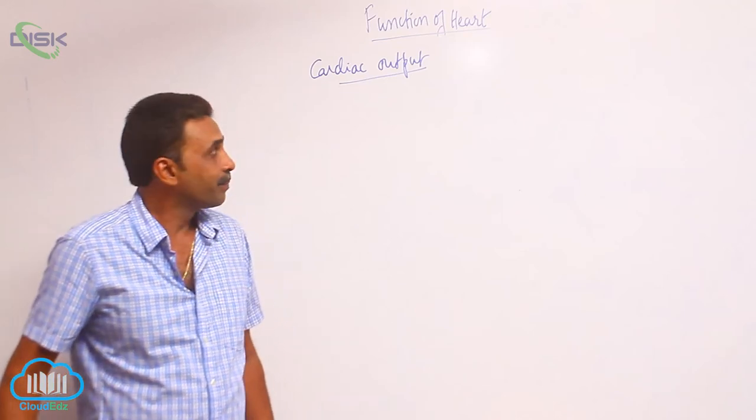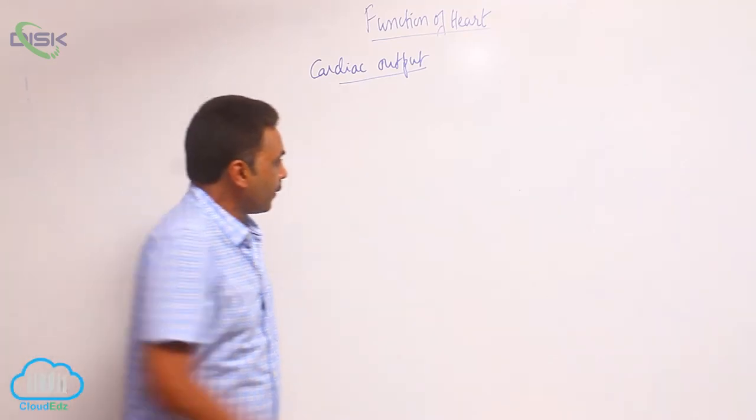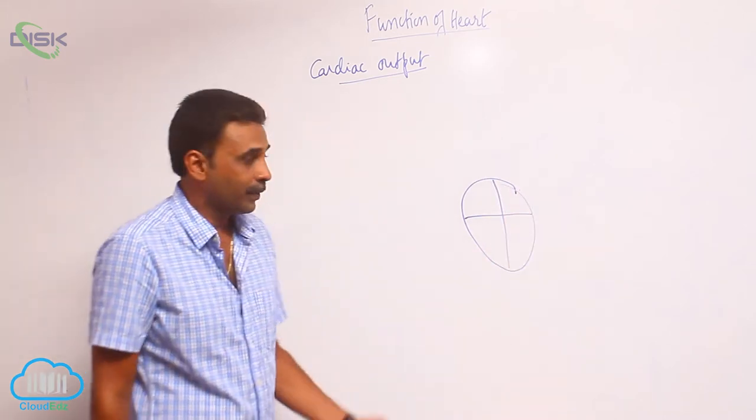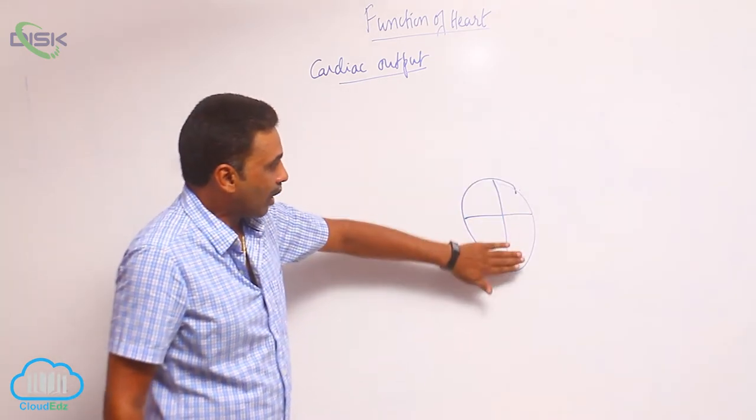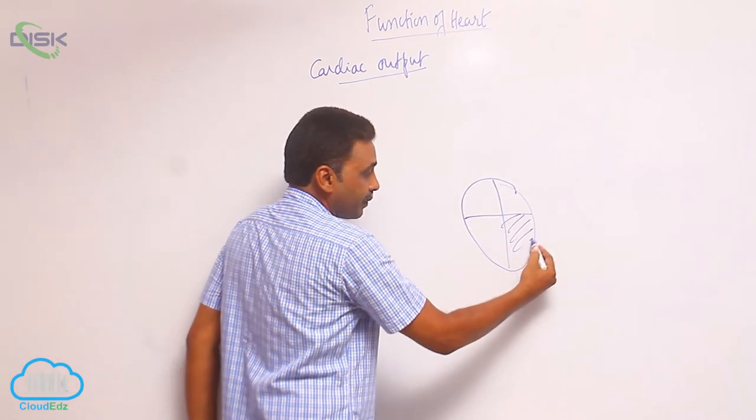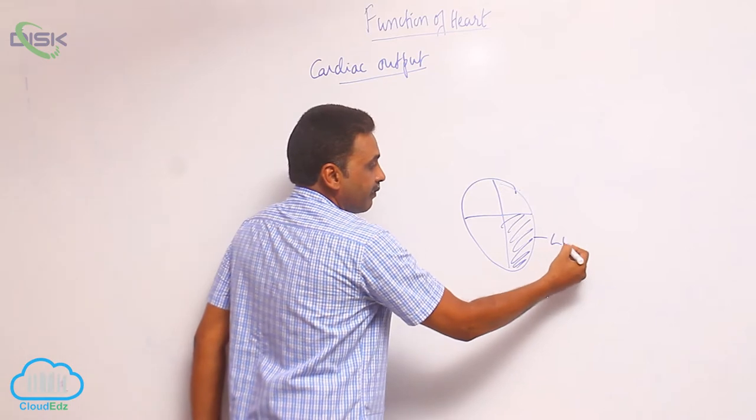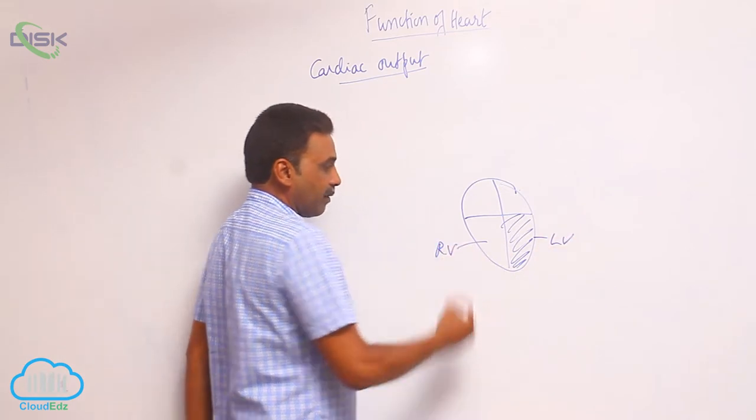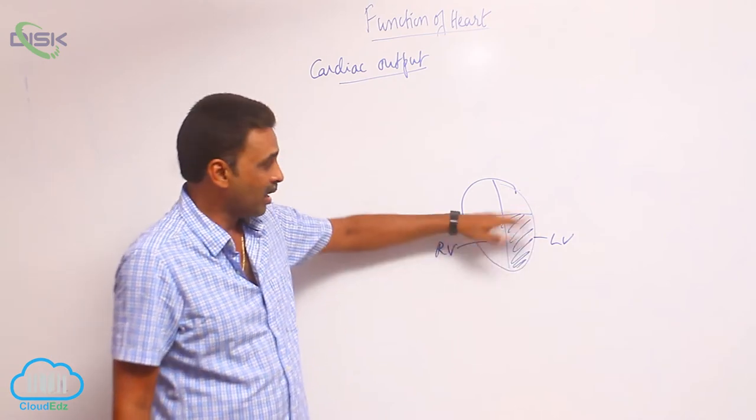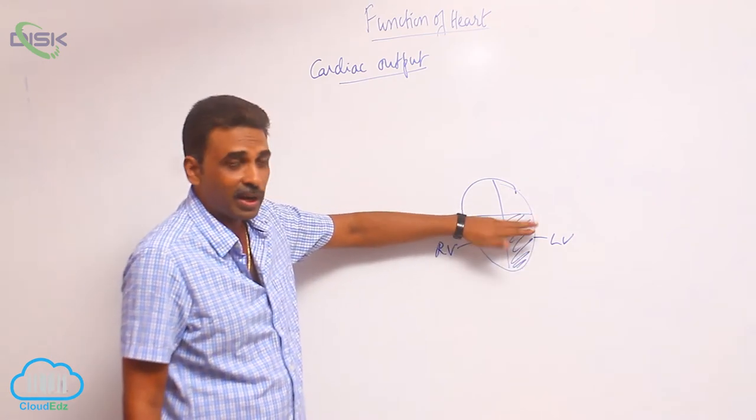Cardiac output. After each ventricle is filled with blood, left ventricle or right ventricle - I'm taking the left ventricle for example. After it is completely filled with blood after atrial systole.